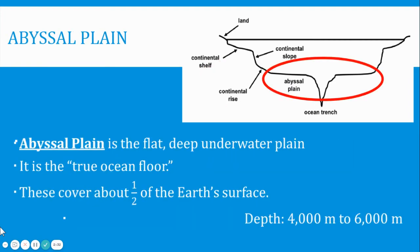The next part is called the abyssal plain. It is a flat, deep, underwater plain in the ocean. It's called the true ocean floor and these cover about half of the Earth's surface. The depth is 4,000 meters to 6,000 meters.